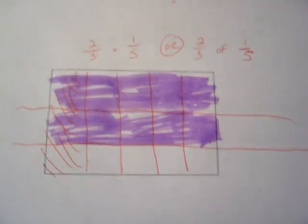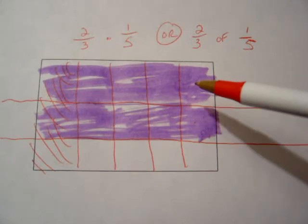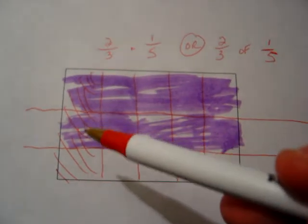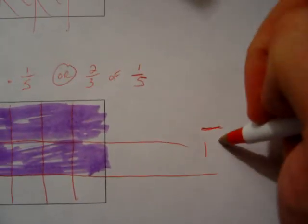How many little individual rectangles do I have? 1, 2, 3, 4, 5, 6, 7, 8, 9, 10, 11, 12, 13, 14, 15. Our denominator of the answer is going to be 15ths.